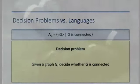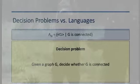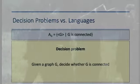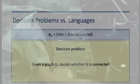We have a language A which consists of representations of undirected graphs, and then the decision problem of undirected graphs which are connected.